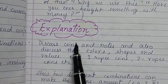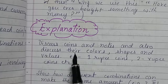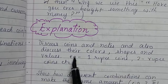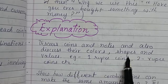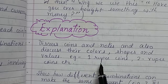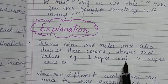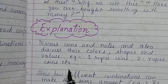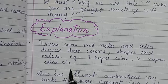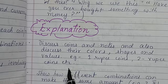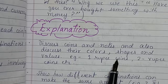Now explanation. Discuss coins and notes and also discuss their colours, shapes, and values. For example, 1 rupee coin, 2 rupee coin, etc. You have to tell the shape of the coin, the value of the coin, and the colour.